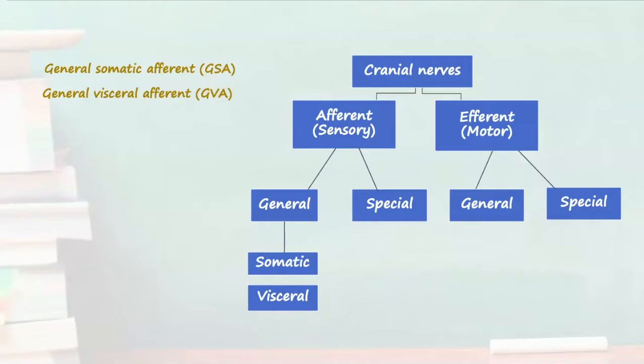We also have special somatic afferents which mediate our special senses such as sensation from the retina during vision, audition during hearing and equilibrium to facilitate balance. These are generally derived from the ectoderm layer during embryological development.